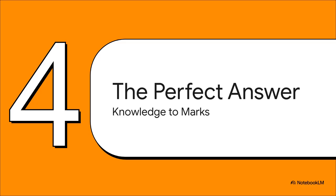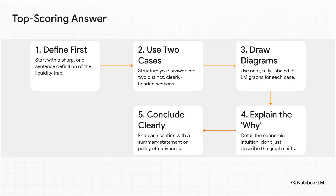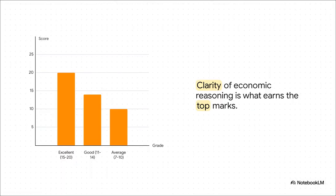We've got the theory down and we understand the two extremes. But knowing this stuff is one thing — getting top marks on an exam is another. So how do you turn all this knowledge into that perfect, high-scoring answer? Follow this roadmap: define first, split it into two cases, draw neat diagrams, explain the why behind the shifts, and then stick the landing with a clear conclusion. The difference between a good answer and an excellent one isn't the graph — lots of people can draw a graph. The difference is the why. Clearly explaining why there's no crowding out, or why monetary policy is so potent in the other case — that's the golden ticket.